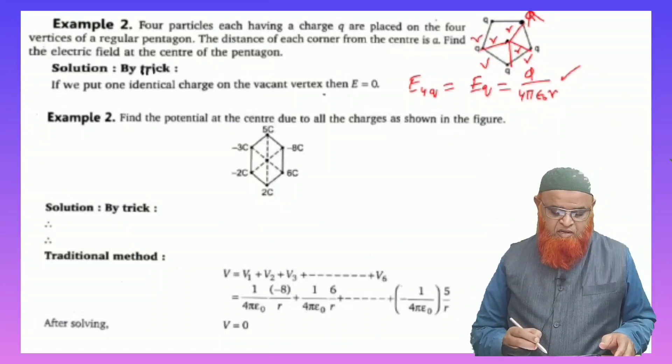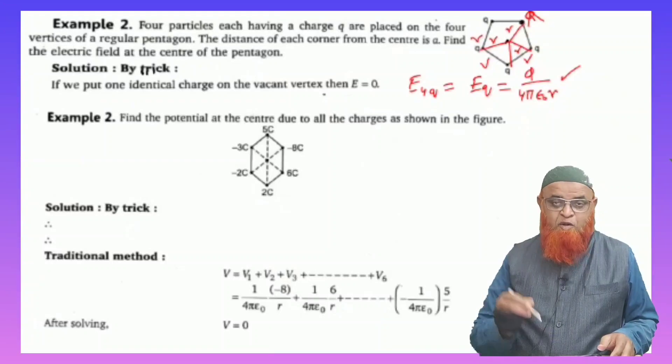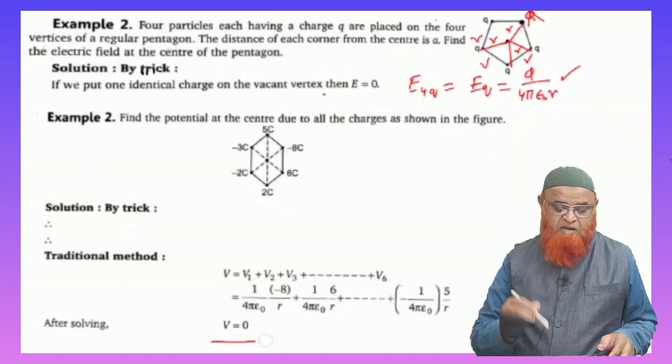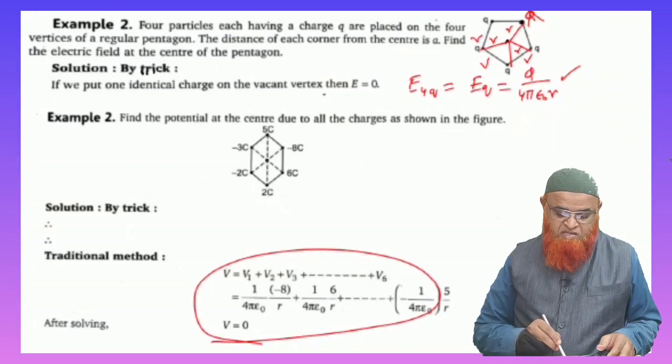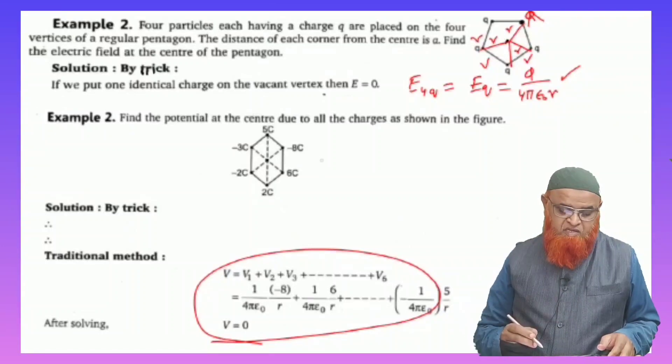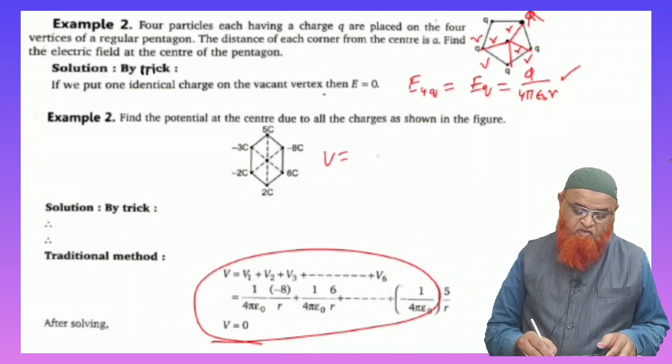So here, if you observe the traditional method to find out the electric potential of a hexagon—pentagon was a hexagon—so what is the traditional method? You have to find out all these things. You have to add all the potentials. Instead of this, there is a shortcut formula. What is that shortcut formula?